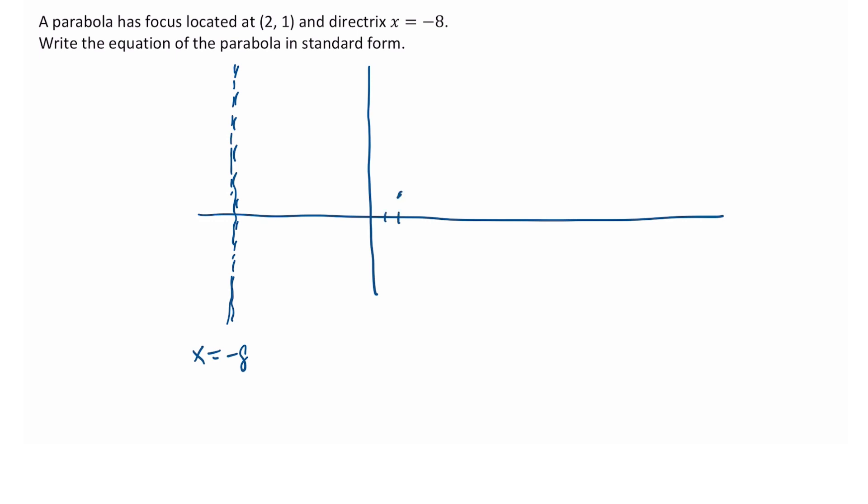In taking a look at that, I know that the vertex is halfway between the directrix and the point (2, 1) along the line y equals 1. I already know that the y-coordinate is 1. To find the x-coordinate, I need to find the x-value that is halfway between negative 8 and 2.